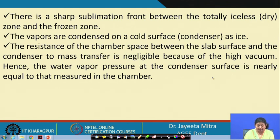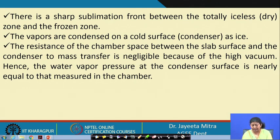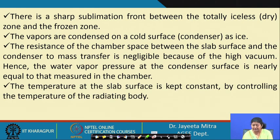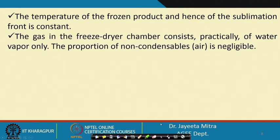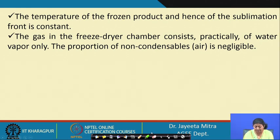Because of the high vacuum, we consider that the resistance of the chamber space to mass transfer is negligible. The water vapor pressure at the condenser surface is nearly equal to that in the chamber. The temperature at the slab surface is kept constant by controlling the temperature of the radiating body, and the gas in the freeze dryer chamber consists practically of water vapor only, with negligible proportions of non-condensable gases such as air.